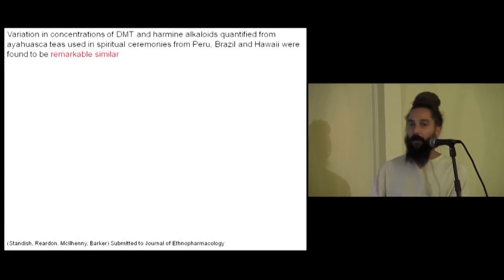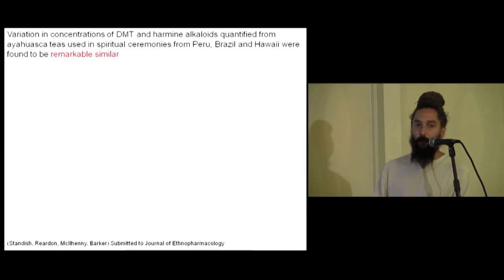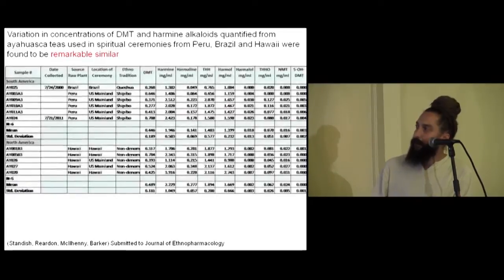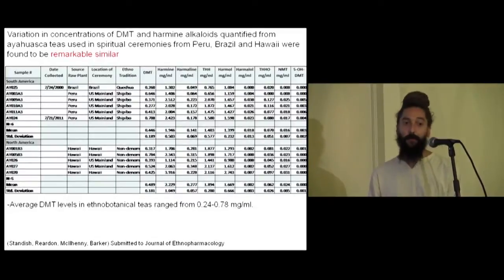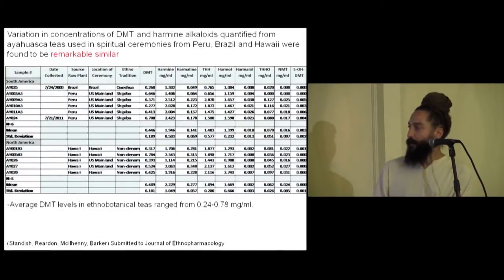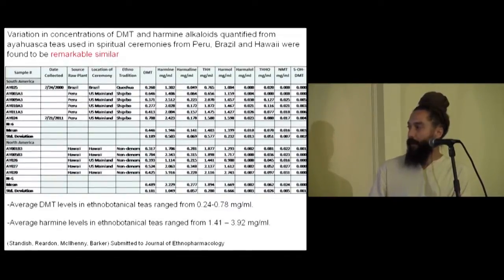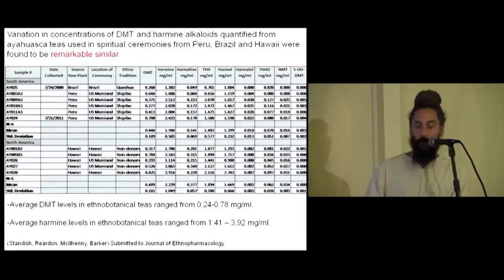We also compared a number of different ayahuasca brews that Leanna Standish obtained from different places in Peru, Brazil, and Hawaii. Some was from Shipibo lineages, some from mainland Hawaii and Peru. We found them to actually have very similar levels of DMT, ranging from 0.24 to 0.78 milligrams per milliliter, while harmine levels were slightly more variable, at 1.14 to 3.92 milligrams per milliliter.